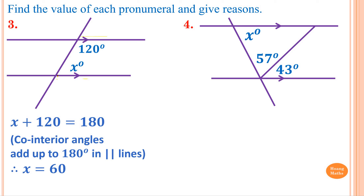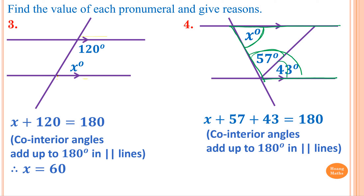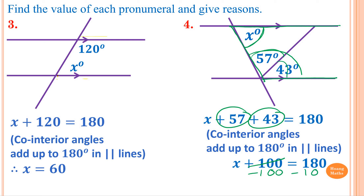Question four: this angle and this angle are both inside, so they are co-interior angles. We know X plus 57 plus 43 equals 180. The reason is co-interior angles add up to 180 degrees in parallel lines. Collecting like terms: 57 plus 43 is 100, so X plus 100 equals 180. Minus 100 from both sides — 180 minus 100 is 80 — therefore X equals 80.